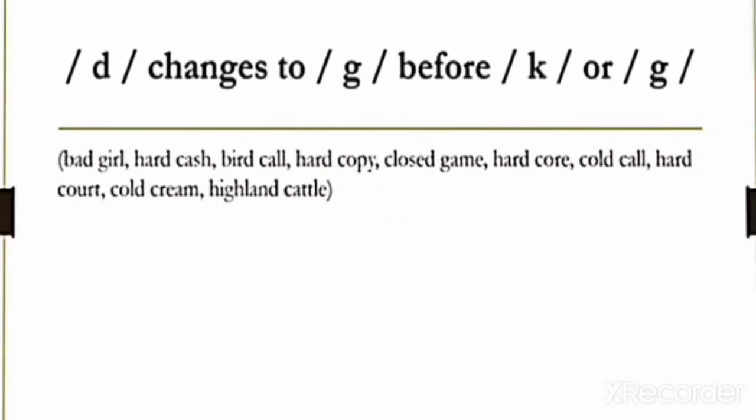Next we have /d/ sound. If /d/ sound comes before /k/ or /g/ sound, it changes to /g/ sound. Like bad girl, hard core, cold cream, hard coat, cold card. Like that, these all words would be pronounced like that. You have to practice this way.